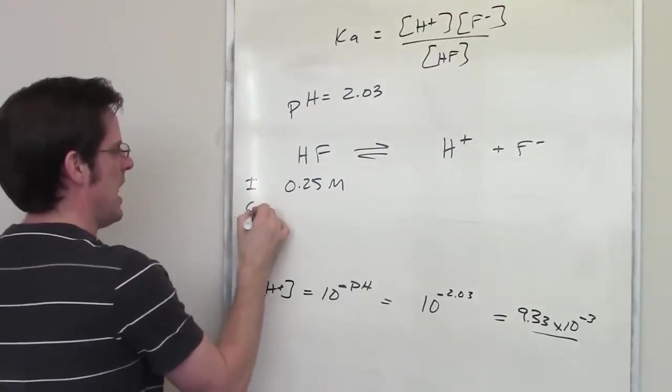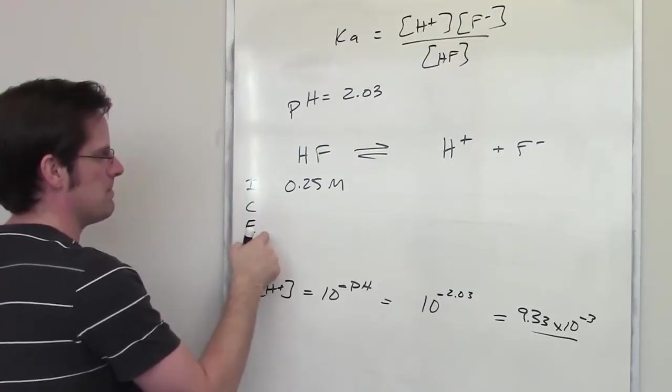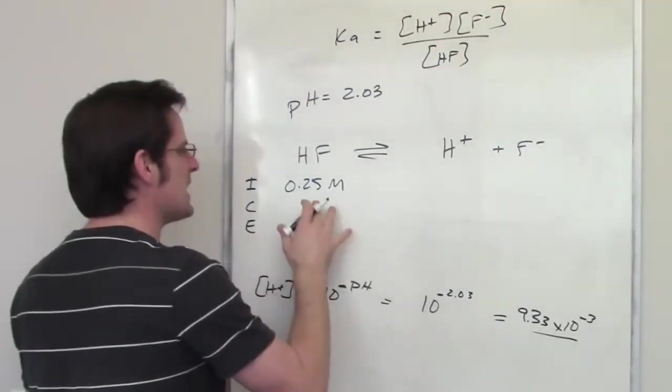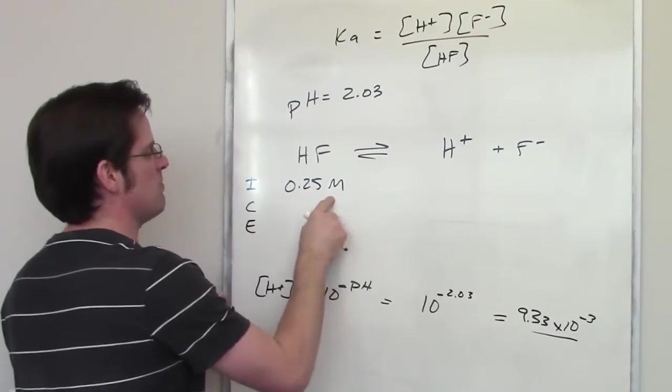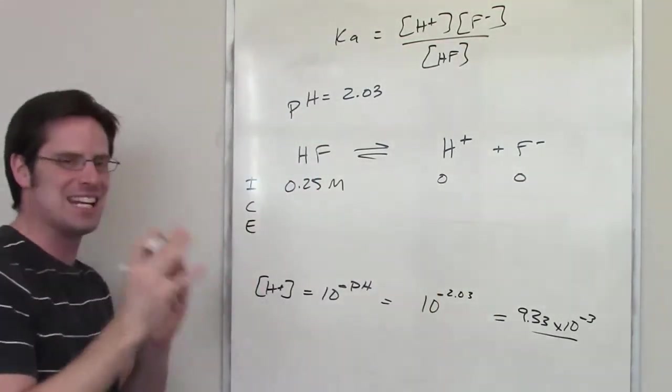So I'll go ahead and write in ICE. ICE stands for Initial, Change, and Equilibrium. Hopefully, it stands to reason that at initiation, I throw in 0.25 molar HF, I've got 0 H+ and 0 F- at initiation. I have some amount of change.